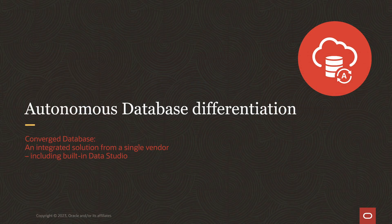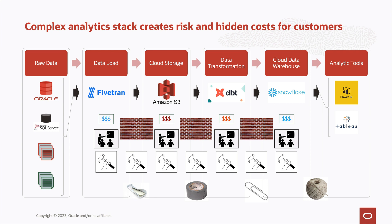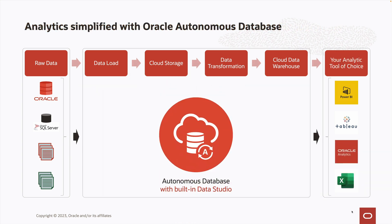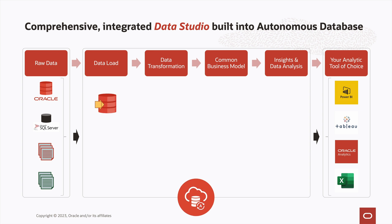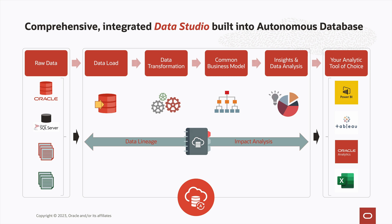With that backdrop, let's consider how Oracle Autonomous Database is a truly differentiated service. This is a logical evolution of our converged database philosophy — an integrated solution, from a single vendor, that includes a built-in Data Studio. Rather than a complex analytics stack with all the inherent risk and hidden costs we've just been discussing, Autonomous Database tremendously simplifies the analytics workflow to guide the customer through the various phases. The Autonomous Data Studio includes tools for data loading, data transformation, building business models, and preparing insights and data analyses. The metadata associated with these tasks is stored in an integrated catalogue that enables clear data lineage and impact analysis.